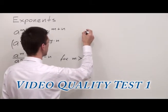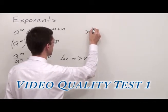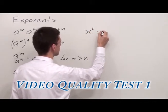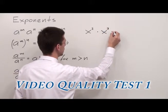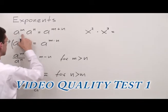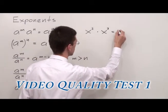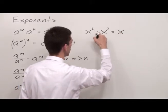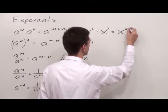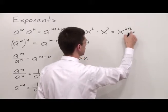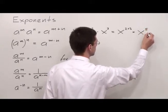For example, I have x to the second power times x to the third power. According to the rule, I have to keep the base. My base is x and I have to add exponents: 2 plus 3, where 2 plus 3 is equal to 5. My answer is x to the fifth power.